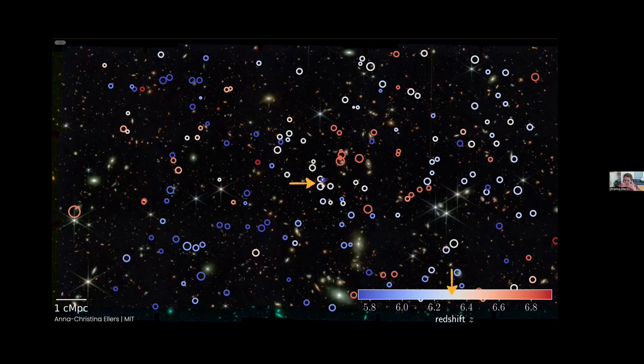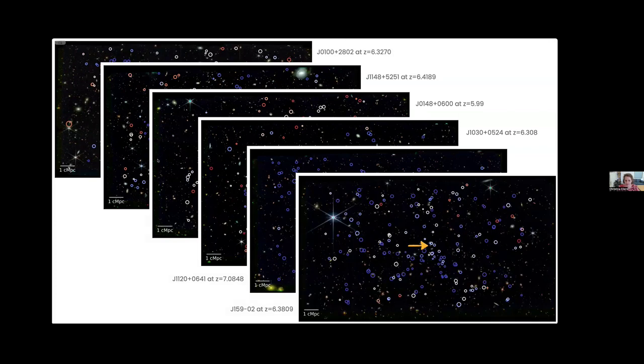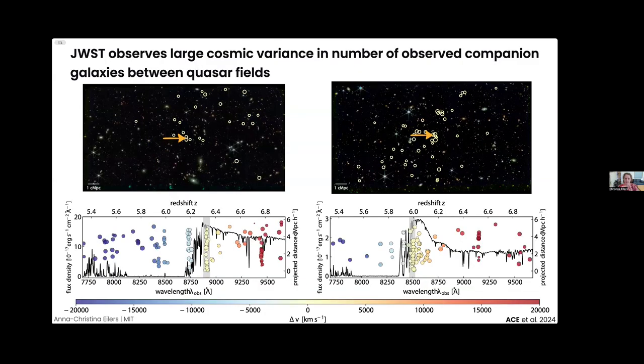Everything circled in blue are galaxies a little bit in the foreground of the quasar. Everything circled in white are galaxies in the immediate vicinity of the quasar at exactly the same redshift, and everything in red are galaxies in the background from our point of view. In total, we observed six of these quasar fields at redshifts around six to seven. There's a whole range of science one can do with this. Valentina mentioned the absorption line studies, metal absorption lines, and the Lyman-alpha forest. But I want to focus only on the galaxies in the immediate environment of these high-redshift quasars, within about a thousand kilometers per second of the central quasar.